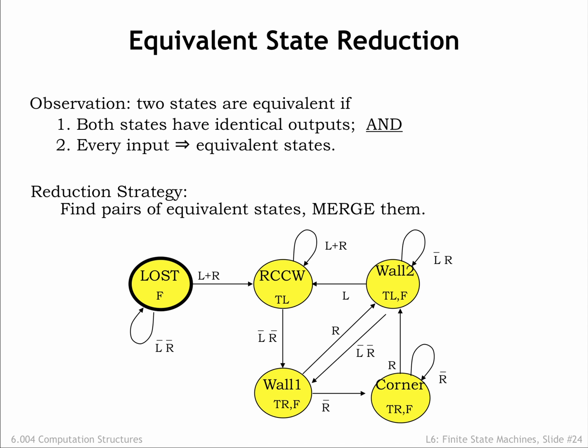If R is 0, both states transition to corner. If R is 1, both states transition to wall 2. So both equivalence criteria are satisfied and we can conclude that the wall 1 and corner states are equivalent and can be merged.